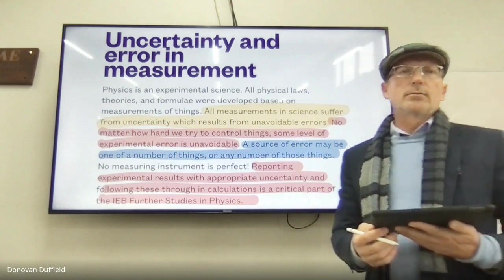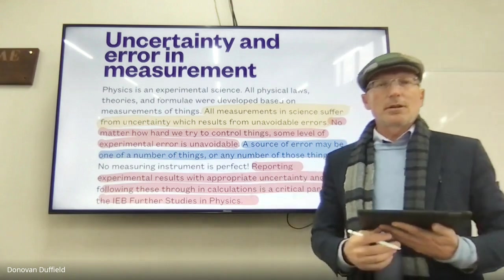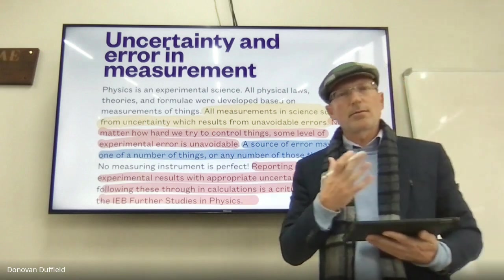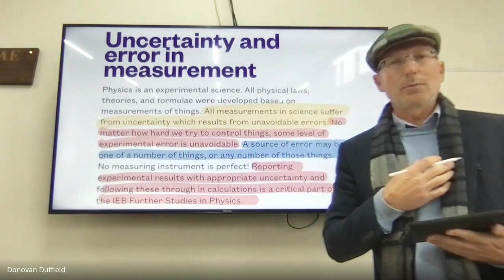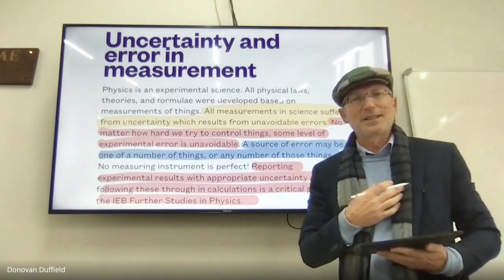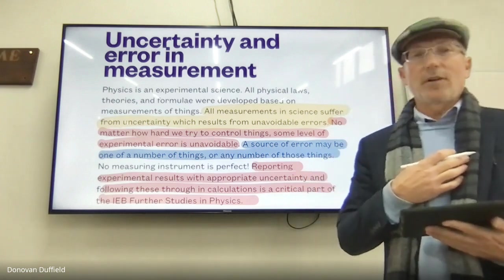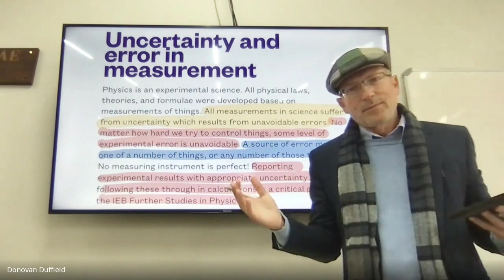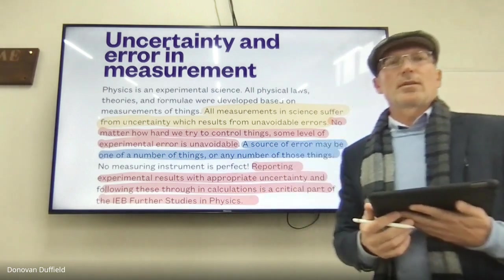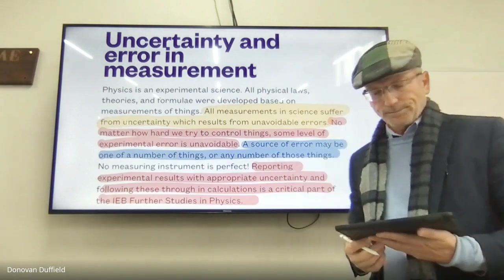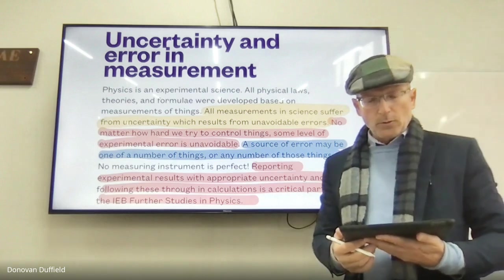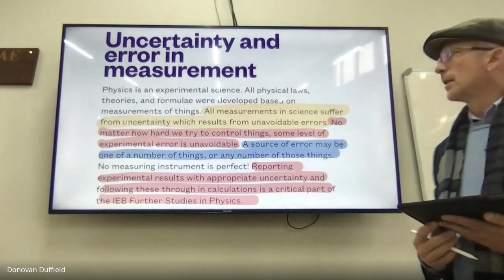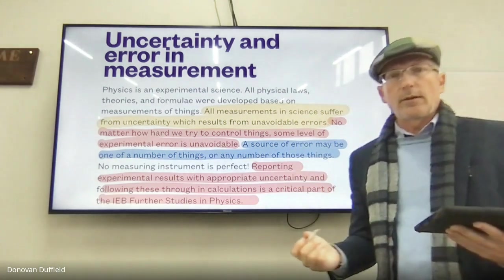At the end of the day, without experimental physicists we can't prove what theoretical physicists put forward. And so all measurements in science suffer from uncertainty, which results from unavoidable errors.